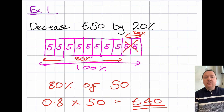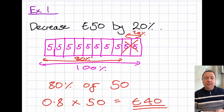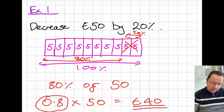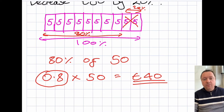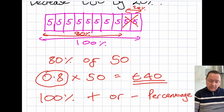This method is called finding a multiplier to do a percentage increase or decrease. It allows us to do the sum in one step, instead of having to find the percentage and then take it away or add it on. What I can do instead is think about this number here as being a multiplier. How we find it is: we always start with 100%, and then we either add or take away the percentage that we are increasing or decreasing by.